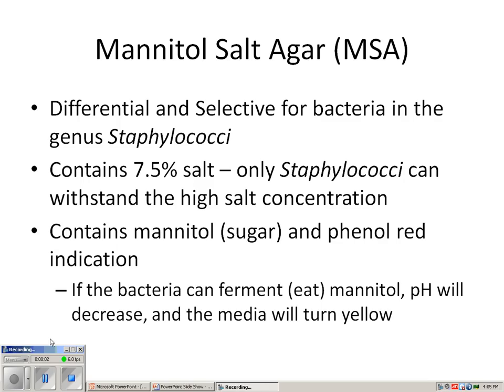I'd like to take a few minutes to go over our next three media. These three media are three different types of selective and utilization media. They allow us to select between one group of bacteria compared to another, and at the same time test for the utilization of some sugar. In our last class, all of our media were utilization media: citrate tested for citrate use, urea tested for urea use, and phenol red tested for the use of whichever sugar was added.